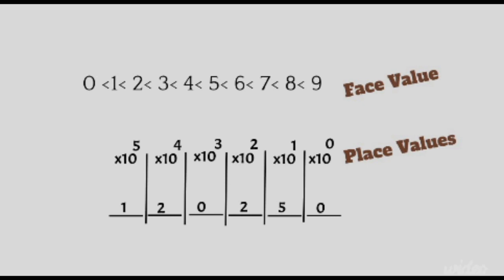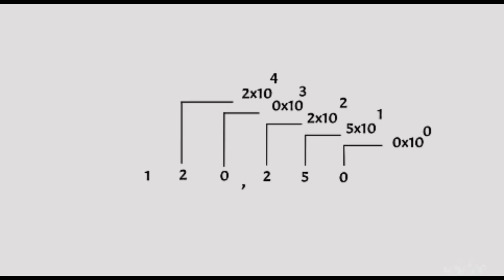Now in our base 10 system, each time you move one place to the left, you increase by powers of 10. So starting from the right, you have each face value multiplied by its place value. So in our number, the first two is found on the third place from the right and the second two on the fifth place from the right.